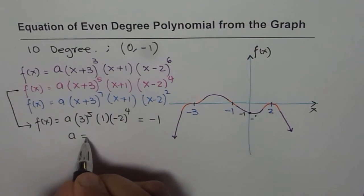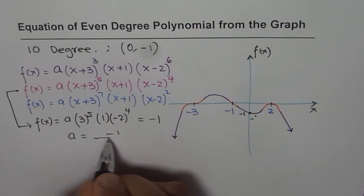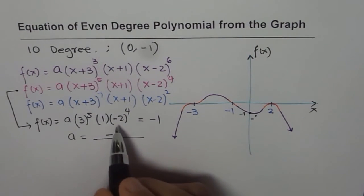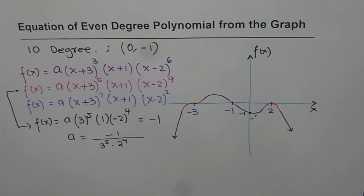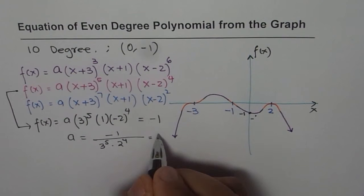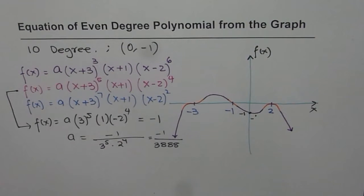That helps to find the value of a. So what is a equals to? So a is now equals to minus 1 divided by all this. 3 to the power of 5 times 2 to the power of 4. So let me write this because positive, of course. 3 to the power of 5 times 2 to the power of 4. That is the value of a. You can always use calculator to find this value. So we are looking for 3 to the power of 5 times 2 to the power of 4. So that gives us 3888. So it is minus 1 over 3888. So we get a value of a.